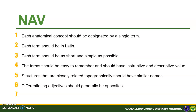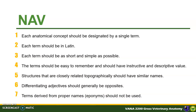Sixth, differentiating adjectives should generally be opposite; for example, major vs. minor, superficial vs. deep. And last, terms derived from proper names or eponyms should not be used, because the choice of eponym has varied by country and was not descriptive of the structure. For example, the eustachian tube is also known as the auditory tube; the canal of Schlemm is also known as the scleral venous sinus; the foramen of Monro is also known as the interventricular foramen.